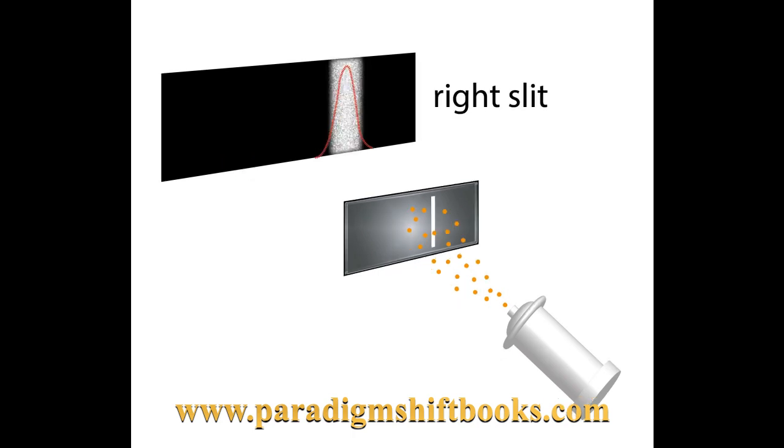If we close the slit on the left and only let light go through the right side, we see that the light is detected by the photographic plate only on the right. Again, just as if the light was made of physical BB's.